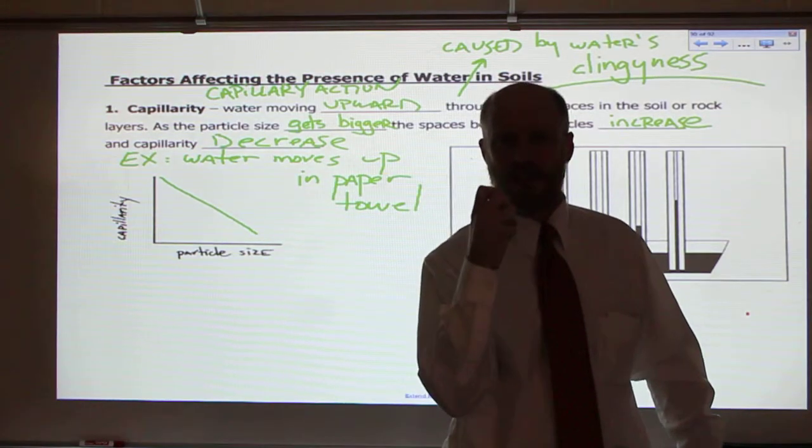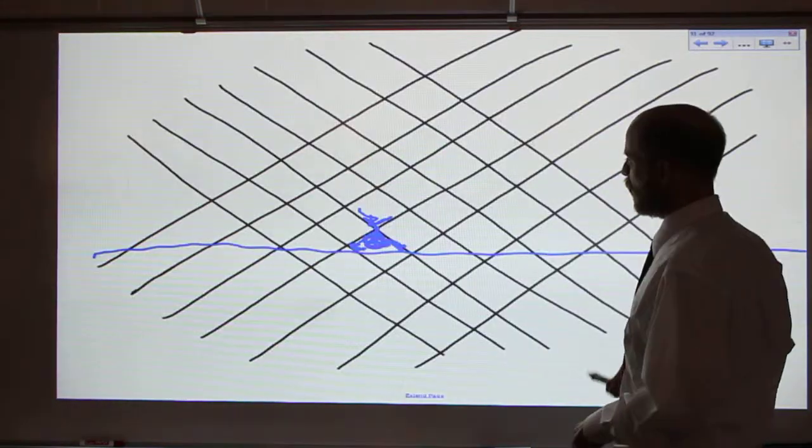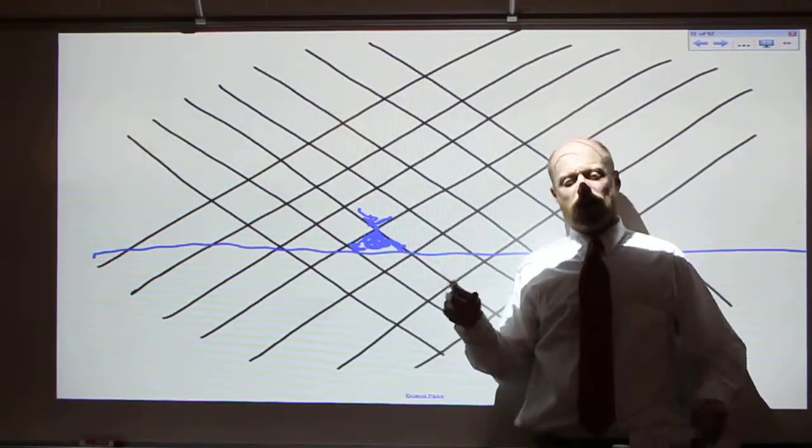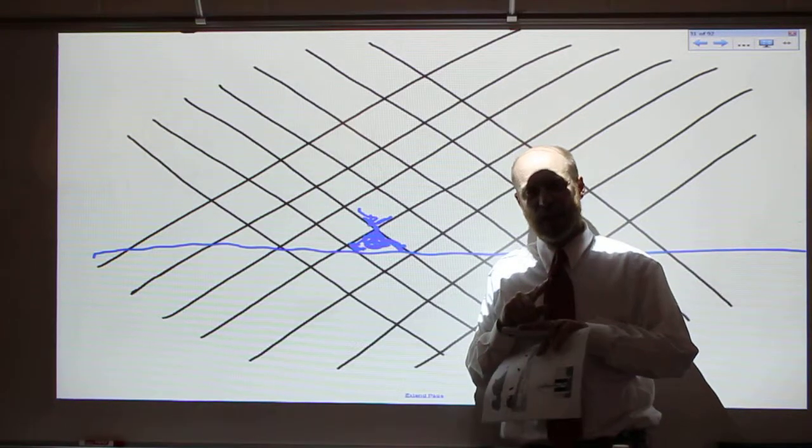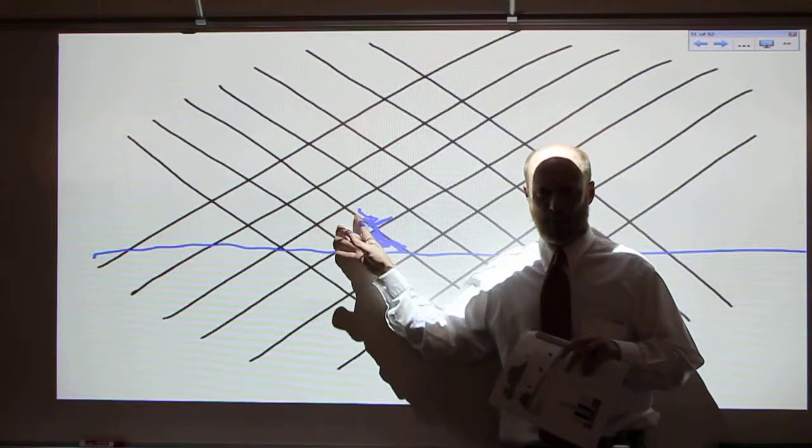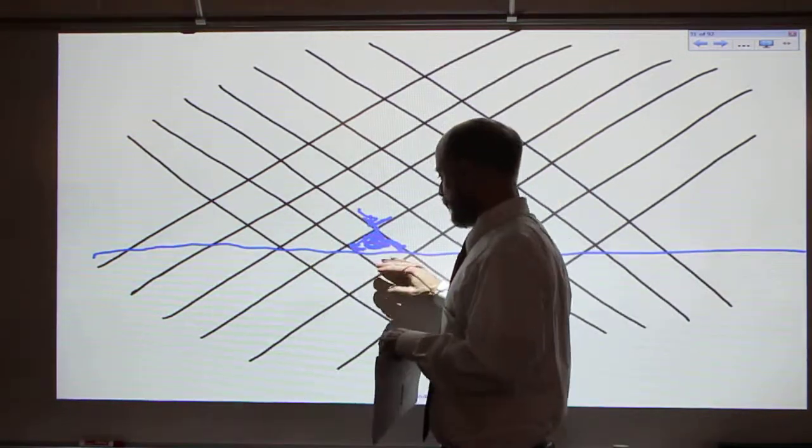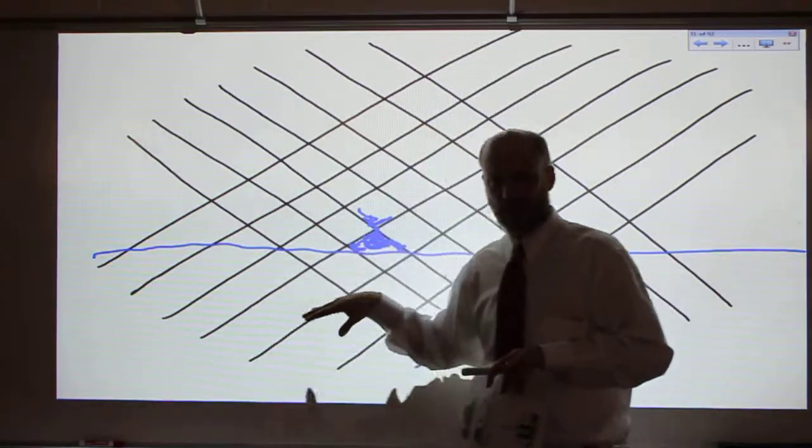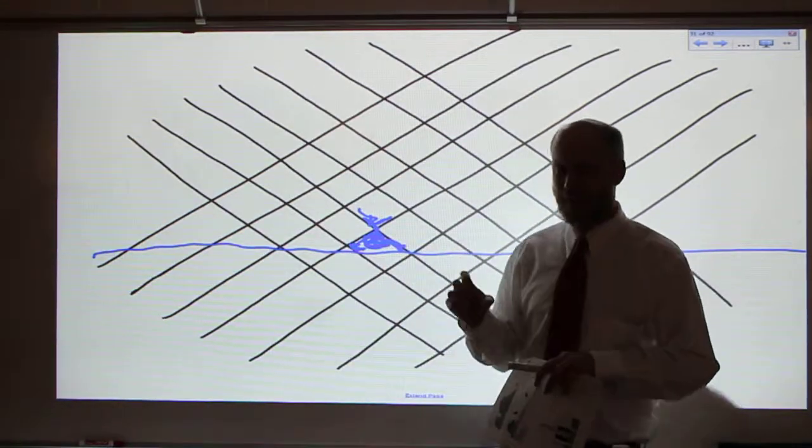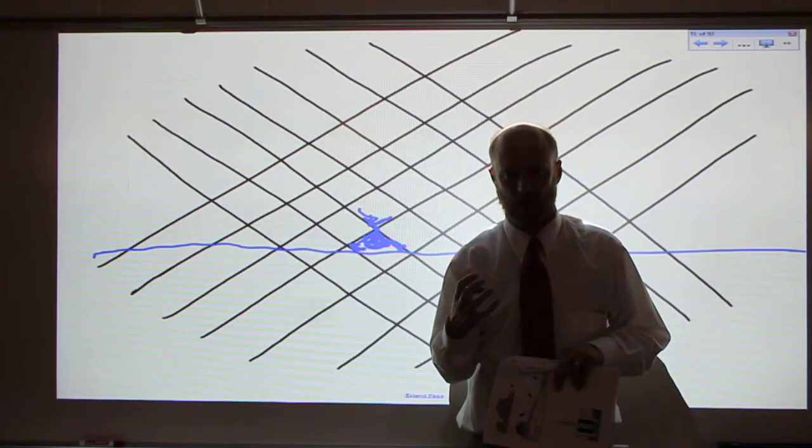Now, why is that? It's because the little fibers of the paper towel. And I'll show you my pretty awesome drawing of the fibers of the paper towel. Here, the paper towel is made of thin fibers of paper and that's what the black represents. And the white is kind of spaced in between. So if this is water here and you put it in a glass of water, the water will move upward. Because water has a clinginess to it.